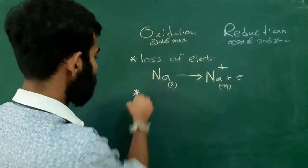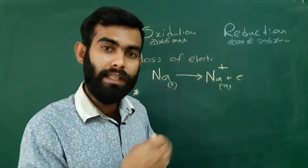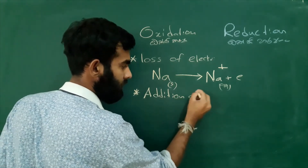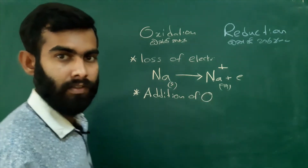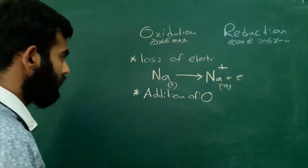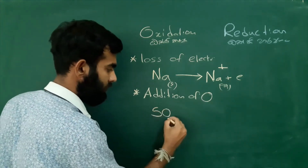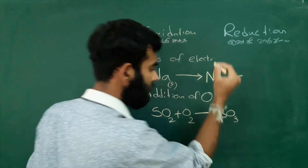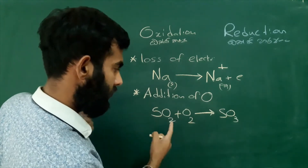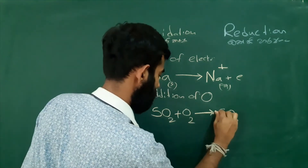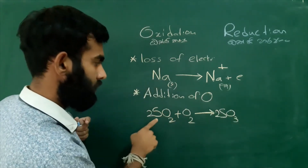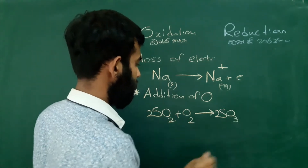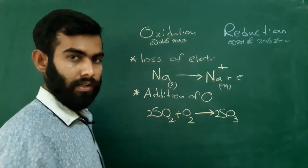There is another definition for oxidation. What is that? Binding with oxygen, or addition of oxygen. For example, consider SO2, sulphur dioxide. It will get one oxygen and convert to SO3. Here, to balance, I have to include 2, 2 sulphur, 2 sulphur — here 4 oxygen and 2 make 6. This type of reaction — addition of oxygen — is also called oxidation.